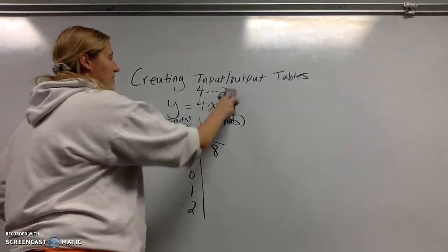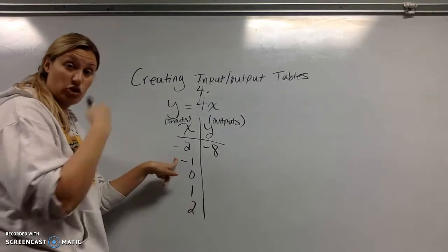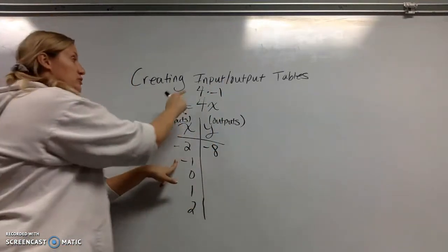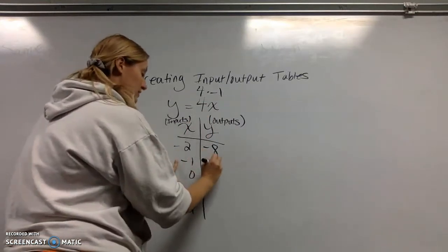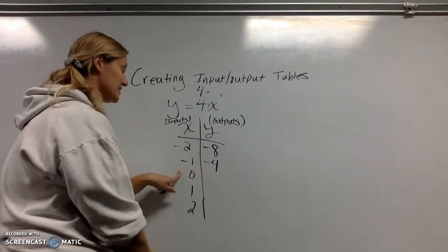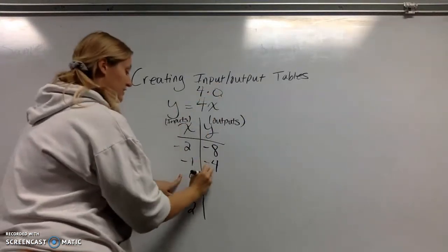Now that I've plugged negative 2 in, I'm going to do the problem again, starting over, plugging negative 1 in for X this time. So 4 times negative 1 is negative 4. Now I'm going to do it again, plugging 0 in for X. I have a different input. 4 times 0 is 0.